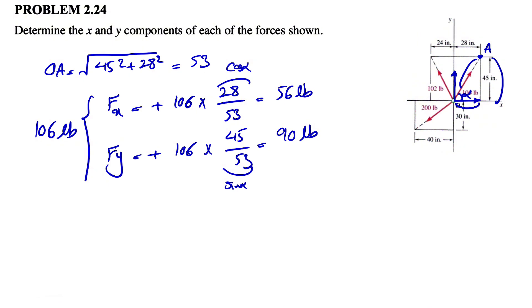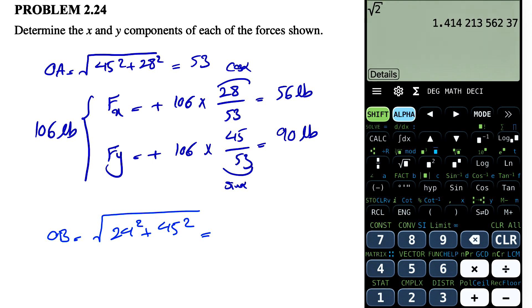Let's move on to the 102 force. I'm going to show it with different colors. So this time we're going to look at this right triangle and we can call this angle beta. And this point we're going to call it B. So again, we're going to find the hypotenuse first. So OB will be the square root of 24 squared plus 45 squared. And let's see what we get. So 24 squared plus 45 squared. That's going to be 51.